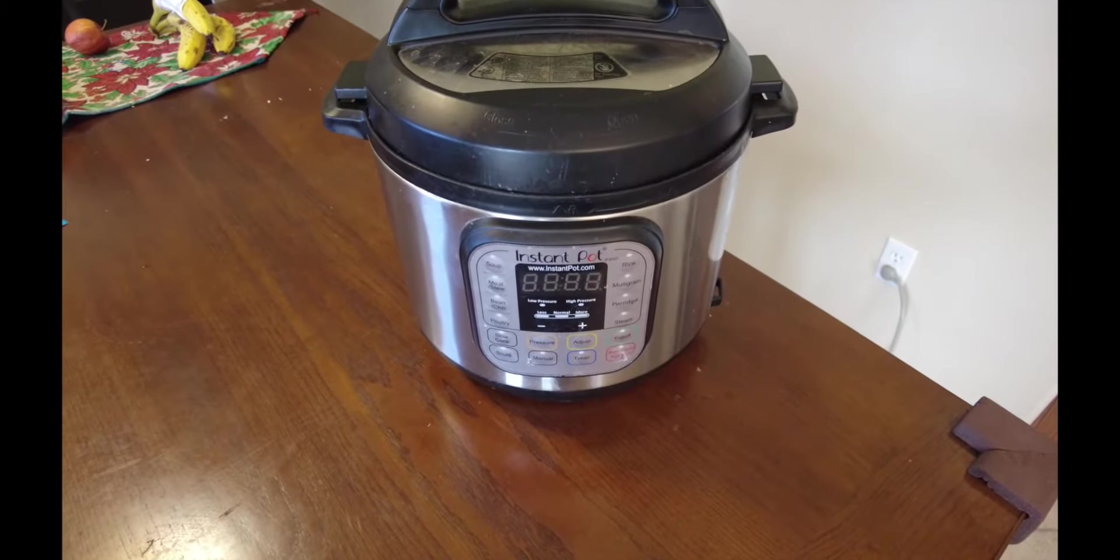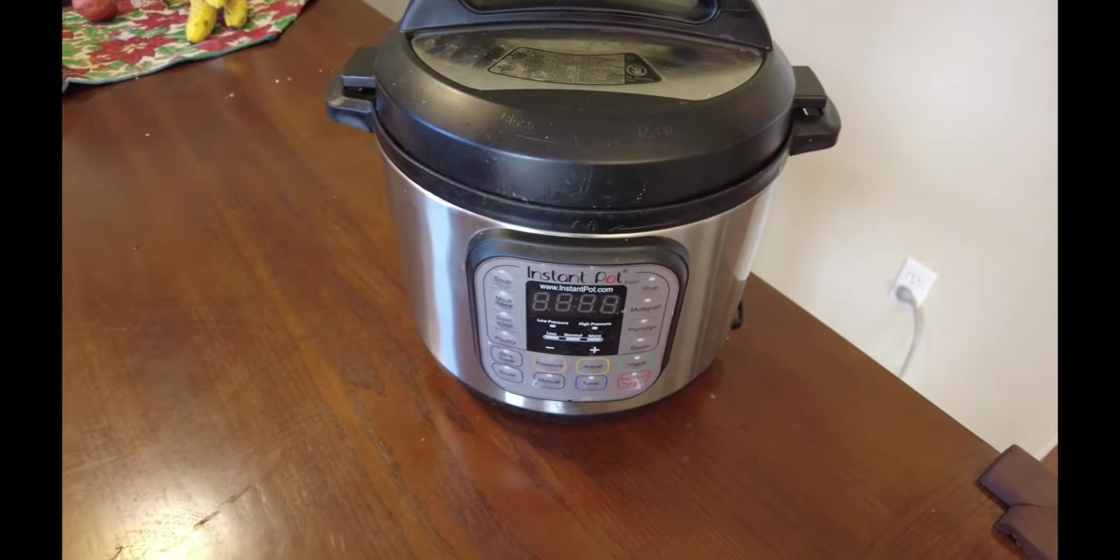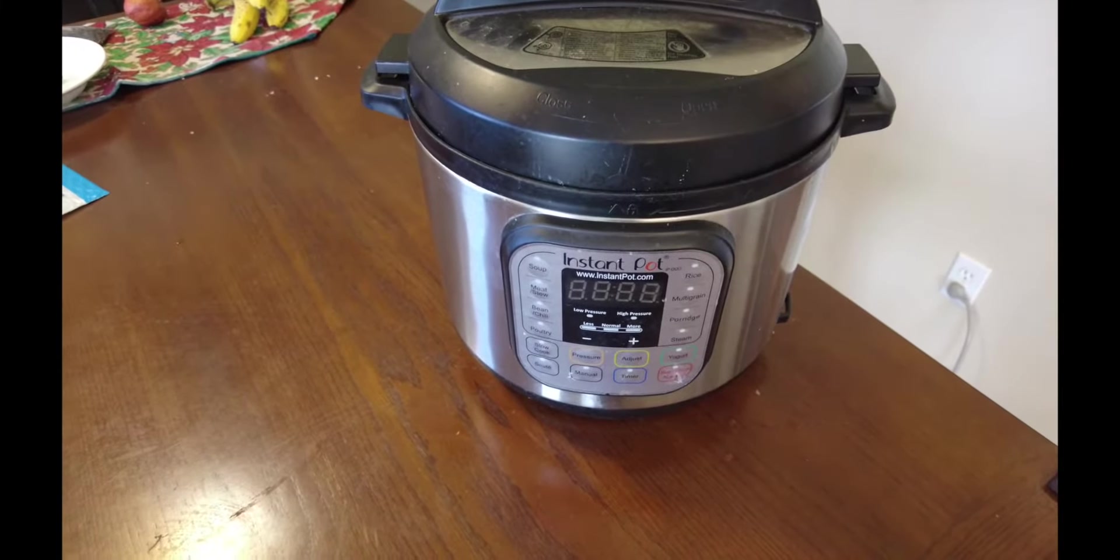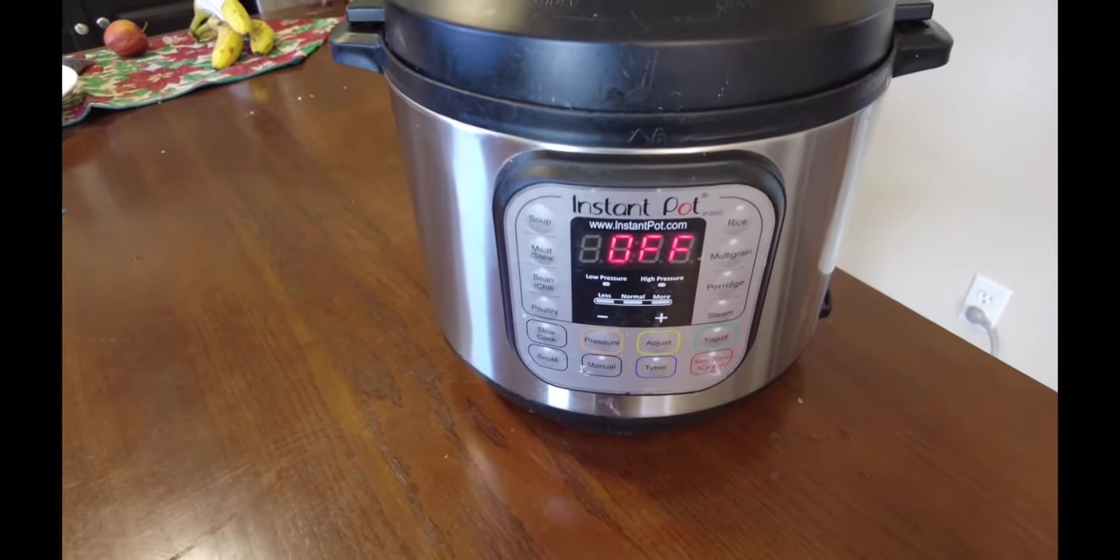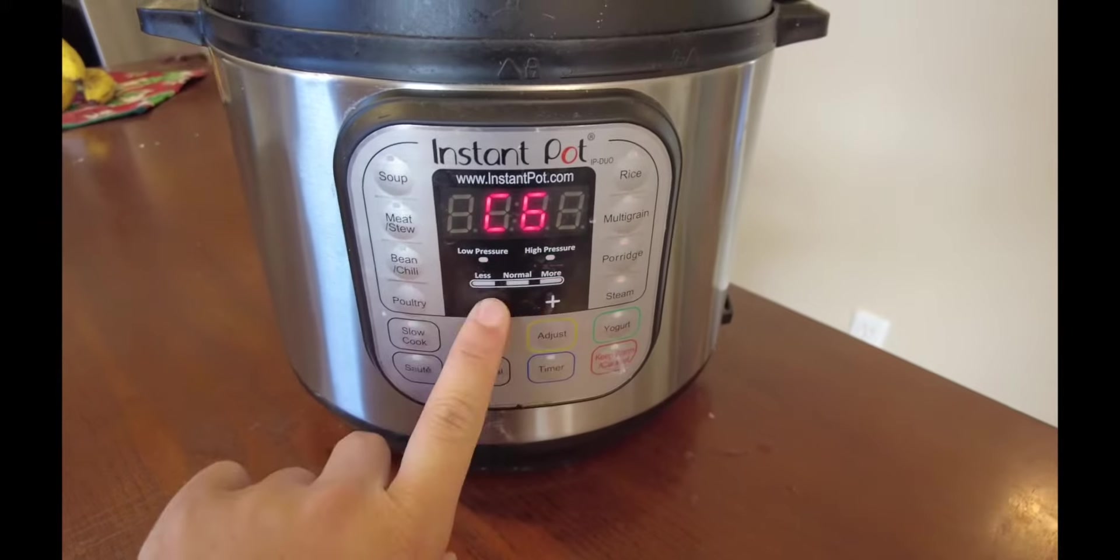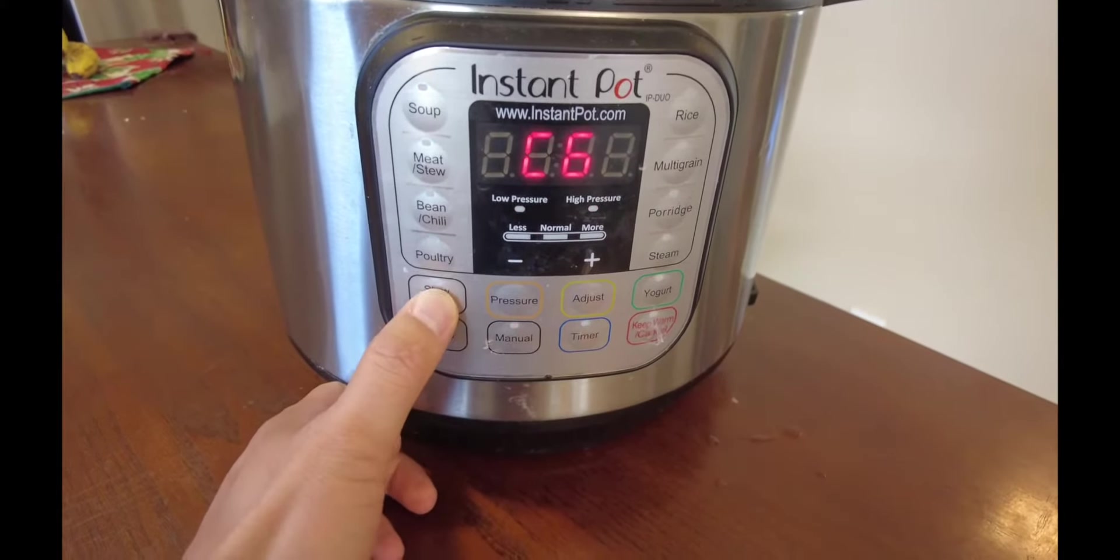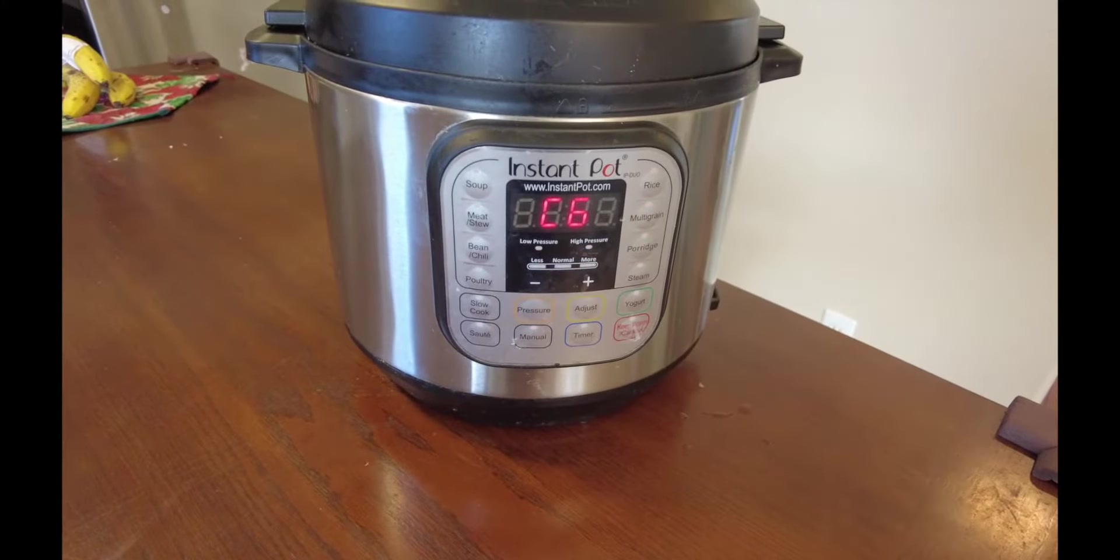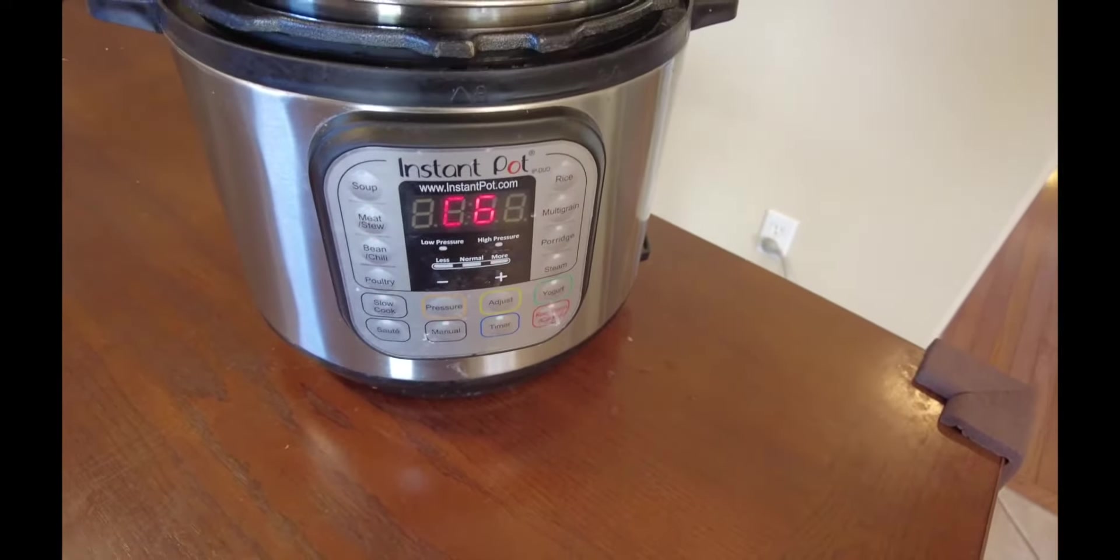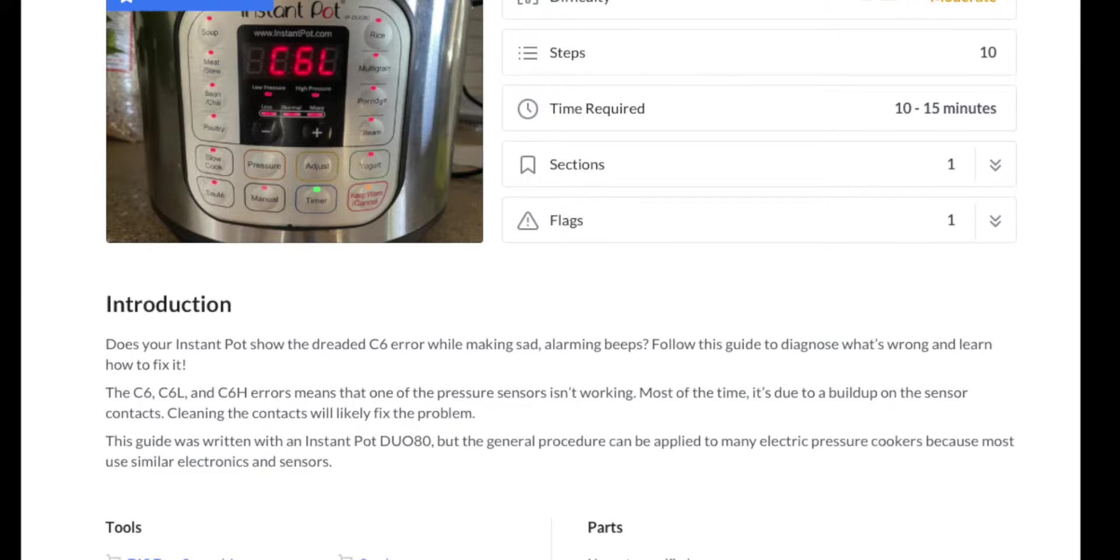This Instant Pot was originally bought from Amazon five years ago, and today is the first time we got the error message. When you turn it on, you can see it flashing all the lights and shows a C6 error. It doesn't matter what button you press, it won't respond. I've checked the website and it said C6 is the pressure sensor error.